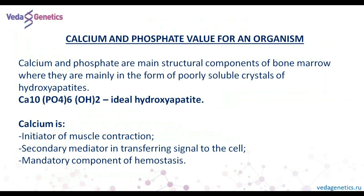It is important that calcium and phosphorus should be balanced. If there is an excess of calcium and a lack of phosphorus, we cannot call it a normal situation. You can see an ideal formula of hydroxyapatite, and phosphorus is one of the main components in it. Calcium initiates muscular contractions, it is also a secondary mediator of signal transmission to the cell, and it is involved in the process of blood coagulation.